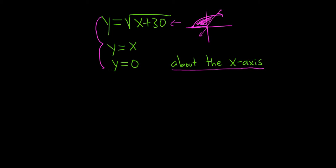Now in order to get a perfect graph or a better graph, we should try to find out where these graphs intersect. So to do that, we can set them equal to each other. So we have the square root of x plus 30, and we set that equal to x.